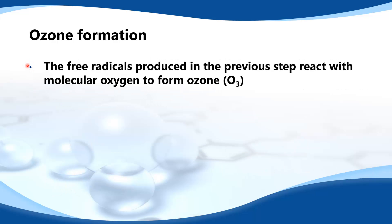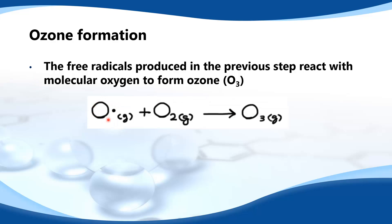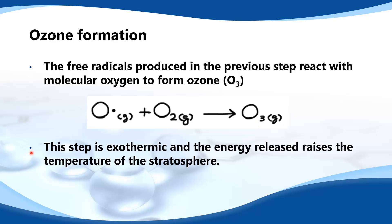In the next step of ozone formation, the free radicals produced in the previous step react with molecular oxygen to form ozone. The oxygen radical reacts with O2, which is molecular oxygen, to form O3, which is ozone. This step is exothermic and the energy released raises the temperature of the stratosphere.